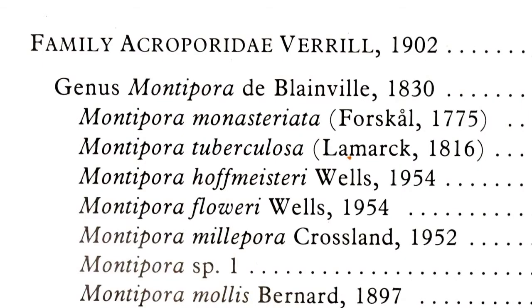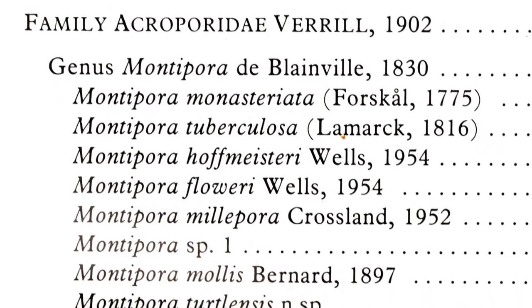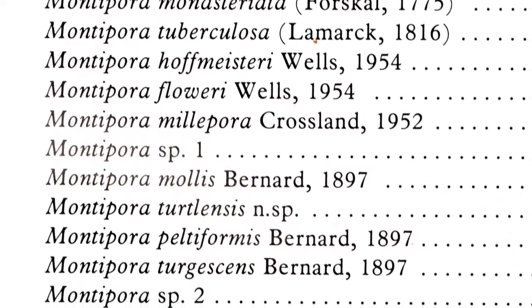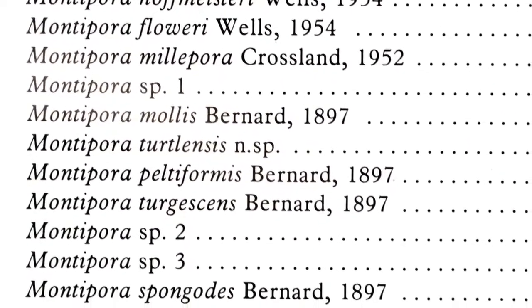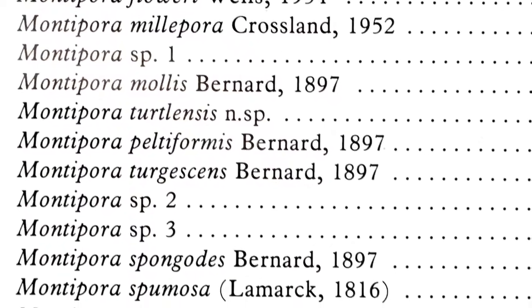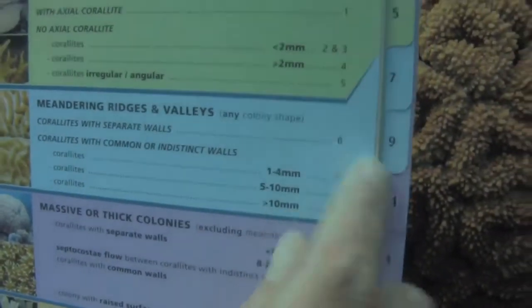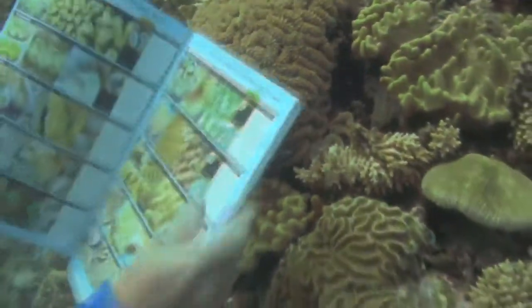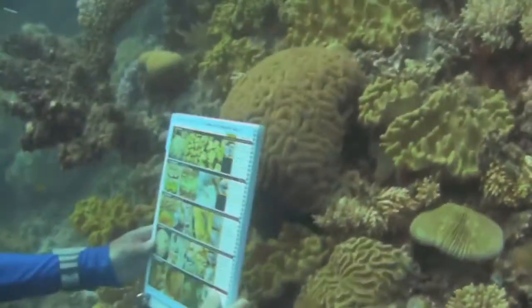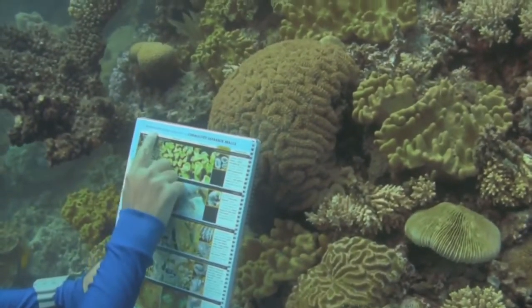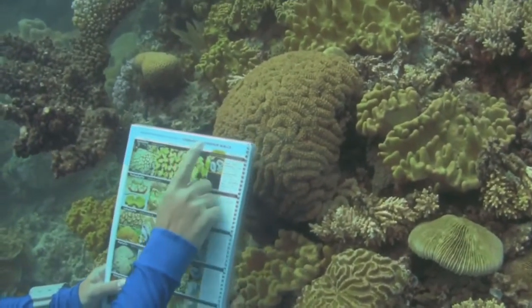Key groups don't reflect any deep evolutionary relationships in the way that scientific classification attempts to do. My advice is to treat key groups as a quick and dirty way to get into the right ballpark. If you don't see a promising lead, it's okay to change your mind and go back and try something else. It's easy and it doesn't hurt.